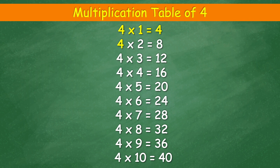Four times one equal four. Four times two equal eight. Four times three equal twelve. Four times four equal sixteen. Four times five equal twenty. Four times six equal twenty-four. Four times seven equal twenty-eight. Four times eight equal thirty-two. Four times nine equal thirty-six. Four times ten equal forty.